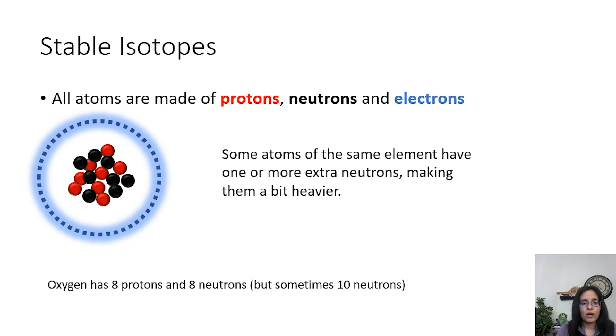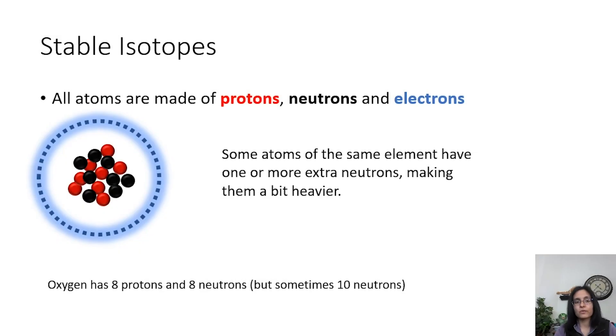The mass of stable isotopes affects how they function in biological processes and how they're distributed in mineral structures. We can measure stable isotopes on an instrument called a mass spectrometer. Since oxygen is a primary component in many minerals and hard parts animals produce — like calcium carbonate shells in clams or foraminifera — we can measure the oxygen isotope values to determine temperature. Heavier oxygen atoms with ten neutrons tend to be more prevalent in colder temperatures, while lighter oxygen atoms are more prevalent under warmer conditions.